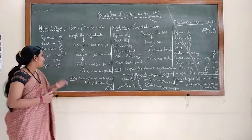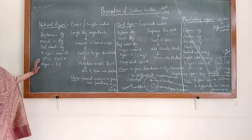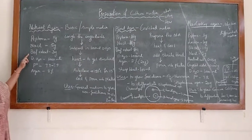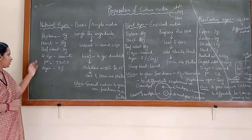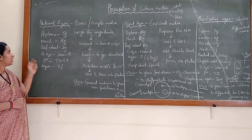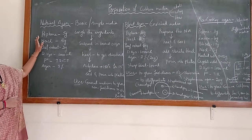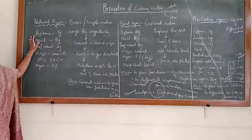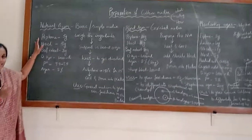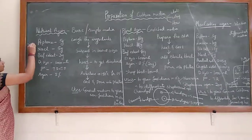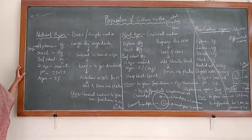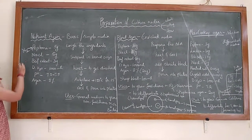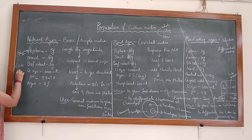Coming to the composition of nutrient agar, it is made up of peptone, NaCl, beef extract, distilled water, and agar. Peptone consists of the enzymatic digest of protein and acts as a source of nitrogen. Beef extract is a source of carbohydrates as well as vitamins.